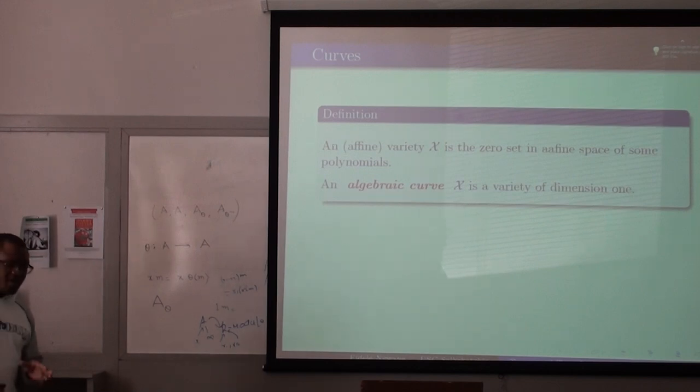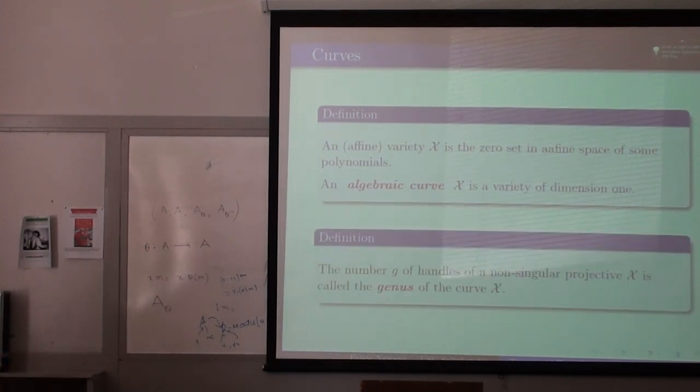This is where algebraic coding theory comes in. It kind of helps a little bit. First of all, we'll talk about algebraic curves. An algebraic curve is just a variety of dimension one. The genus of a curve, topologically, you can think of it like the number of handles. If I have a tire tube, then it has just one handle. So the genus would be one. Think of the genus topologically to be like the number of handles which your object has. These are important parameters when you're studying algebraic codes.